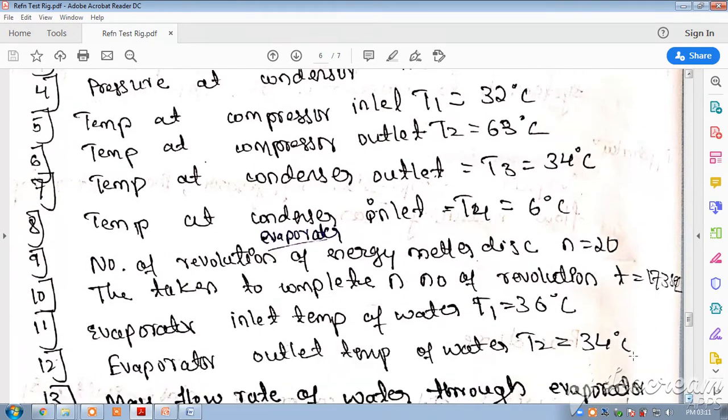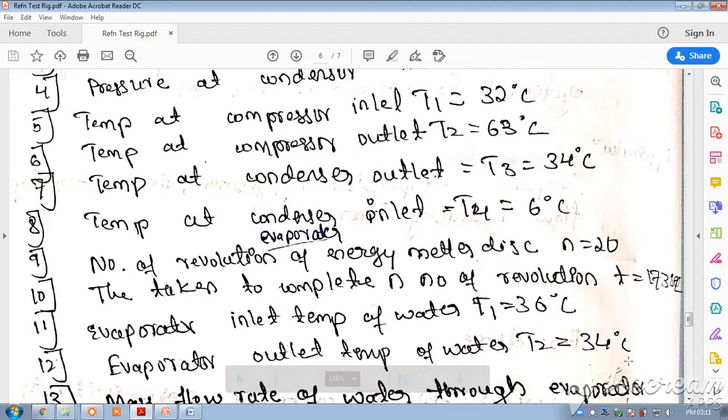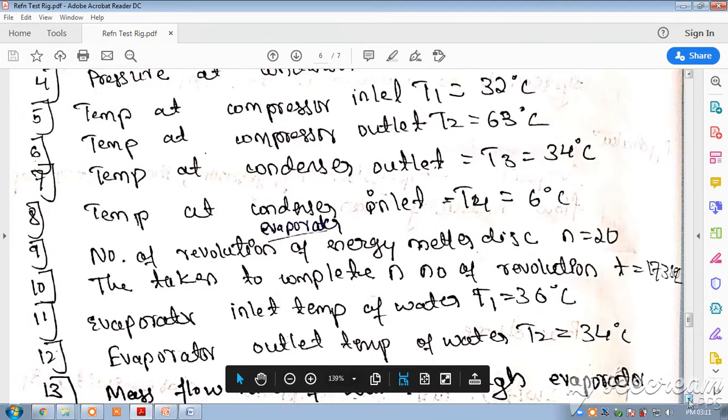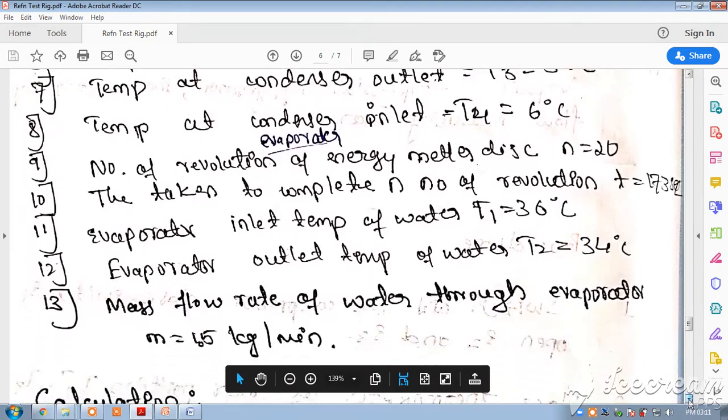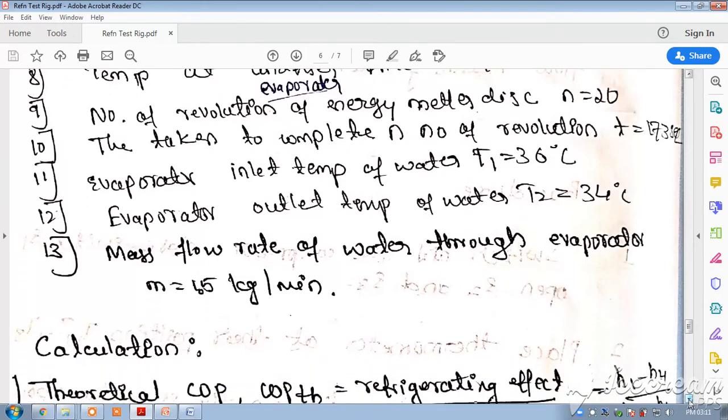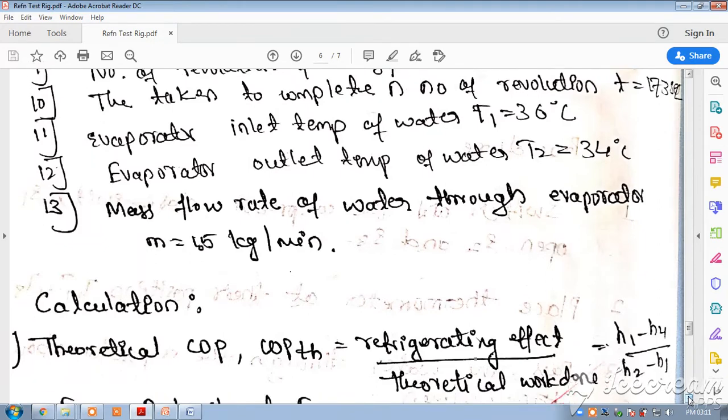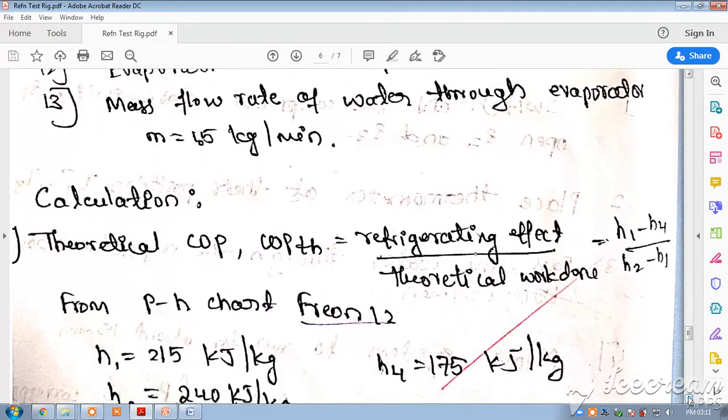We also measure temperatures at the compressor inlet, temperature at the compressor outlet, condenser outlet - all these temperatures are measured. Then the energy meter - the revolutions of the energy meter, the time taken by the energy meter, and the evaporator outlet temperature are taken.